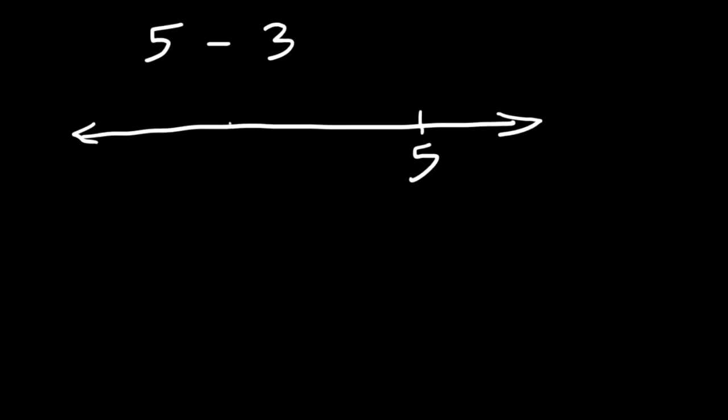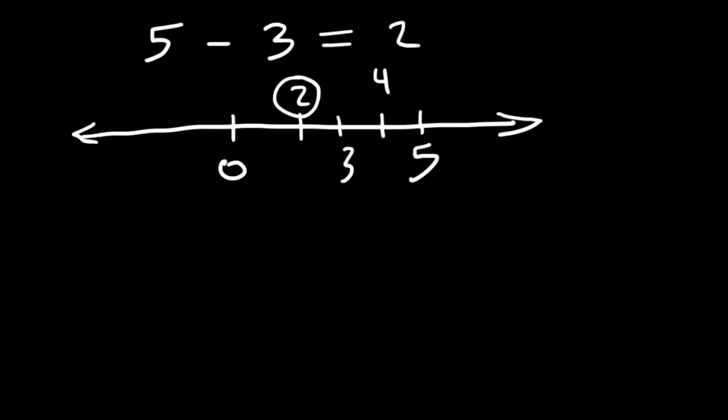Now what if we want to subtract 2 numbers using a number line? Let's start with 5. If you want to subtract 3 units from 5, you need to travel three units to the left. So here's the first one, the second, and the third — landing on 4, 3, and we stop at 2. So 5 minus 3 is equal to 2.